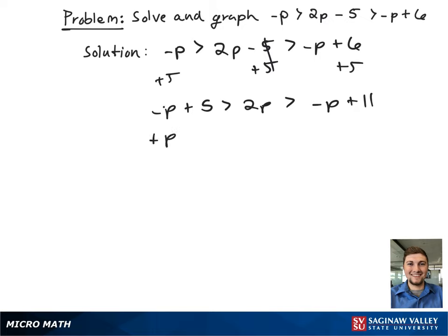Next, we're going to add p to all sides to get rid of these 2p terms on the outsides. This gives 5 is greater than 3p is greater than 11.